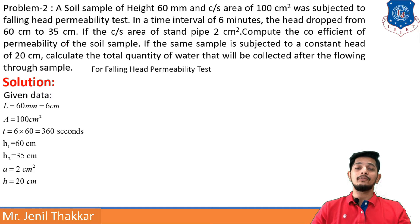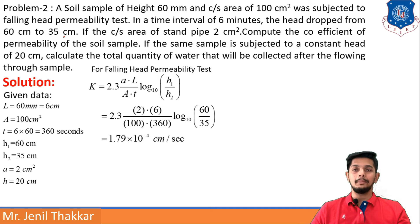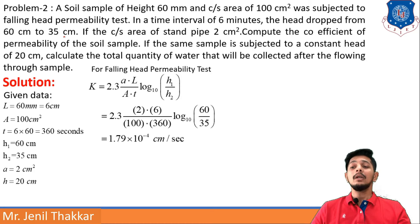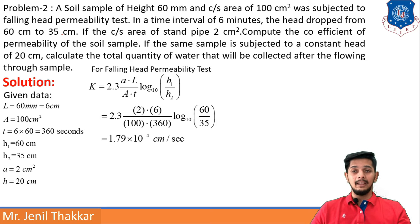For falling head permeability test: k = (2.3 · a · L) / (A · t) · log₁₀(h1/h2). Putting all values into the equation, k = 1.79×10⁻⁴ cm/s.